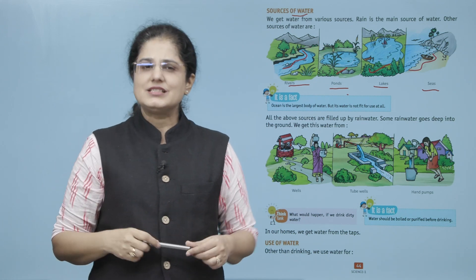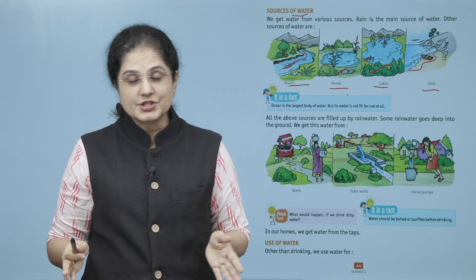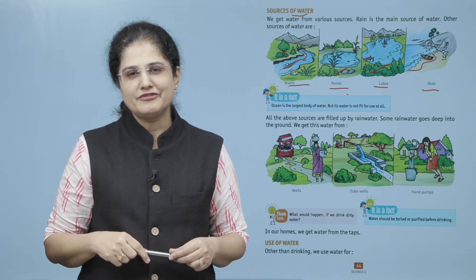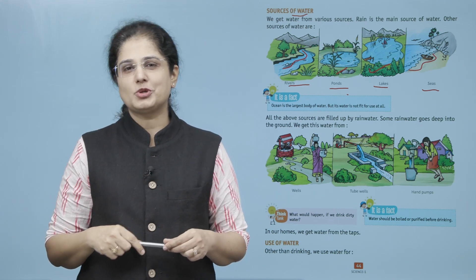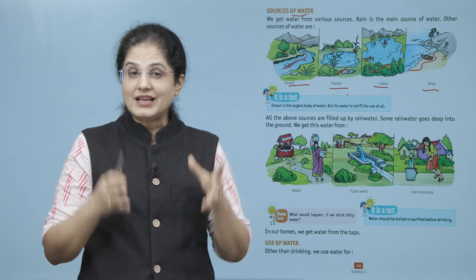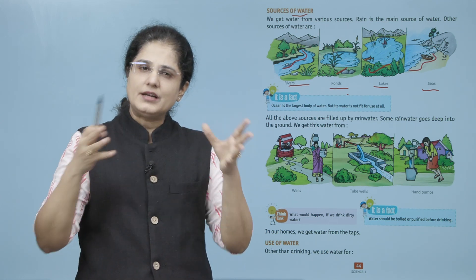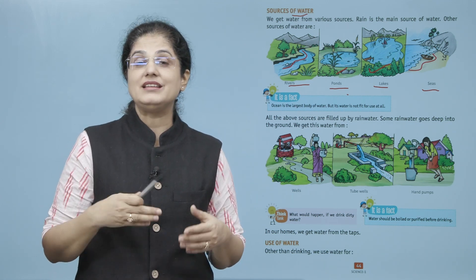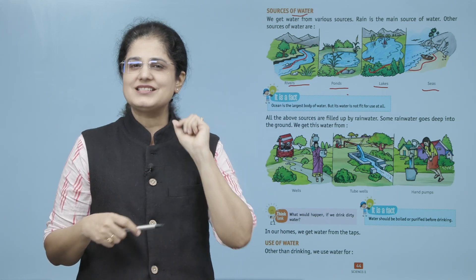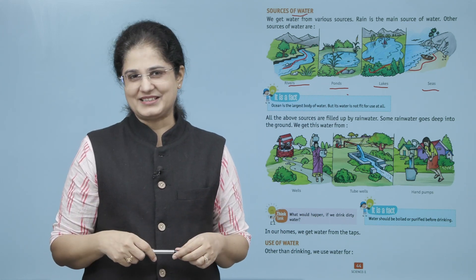Now it is a fact, the ocean is the largest body of water. But its water is not fit for use at all. Jo mahasagar hai, woh hamare earth pe sabse bade source hai. Lekin jo mahasagar ka paani hai, woh ham istamal nahi kar sakti.